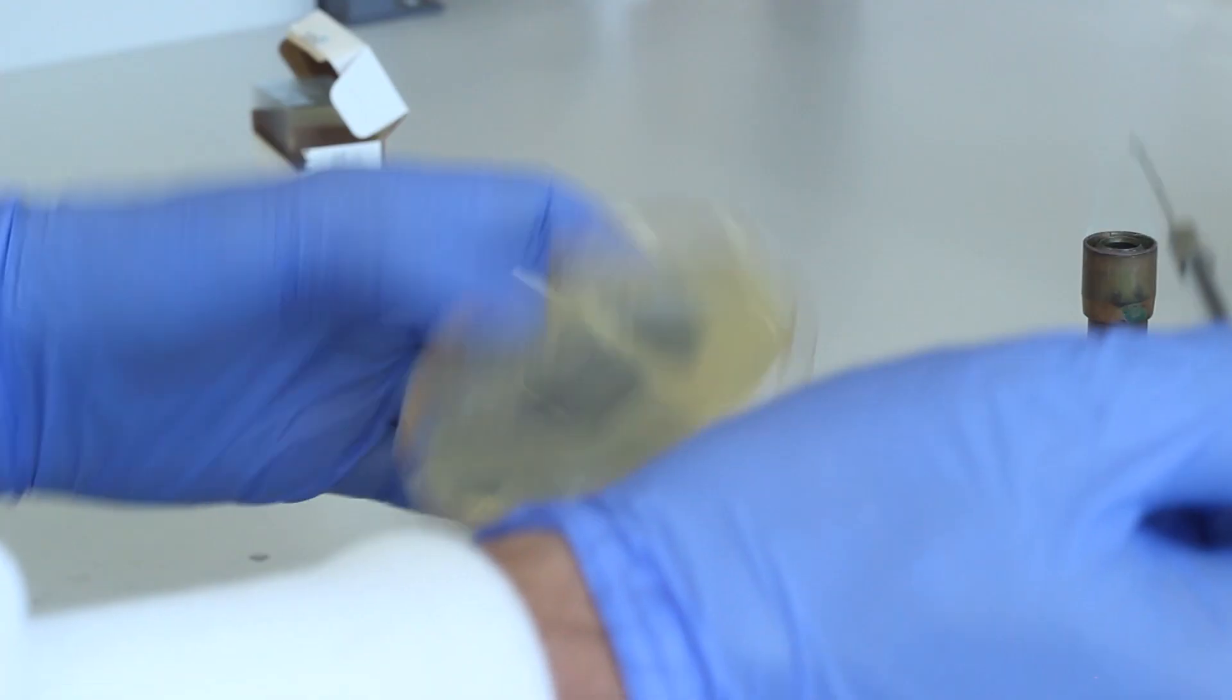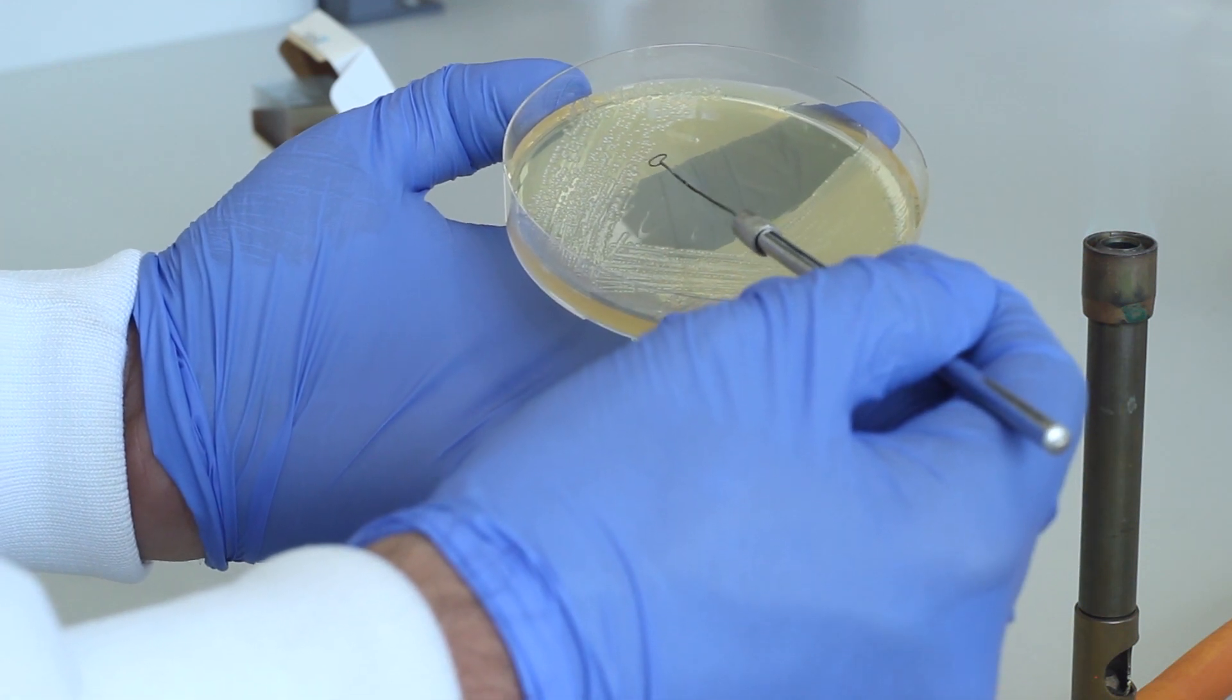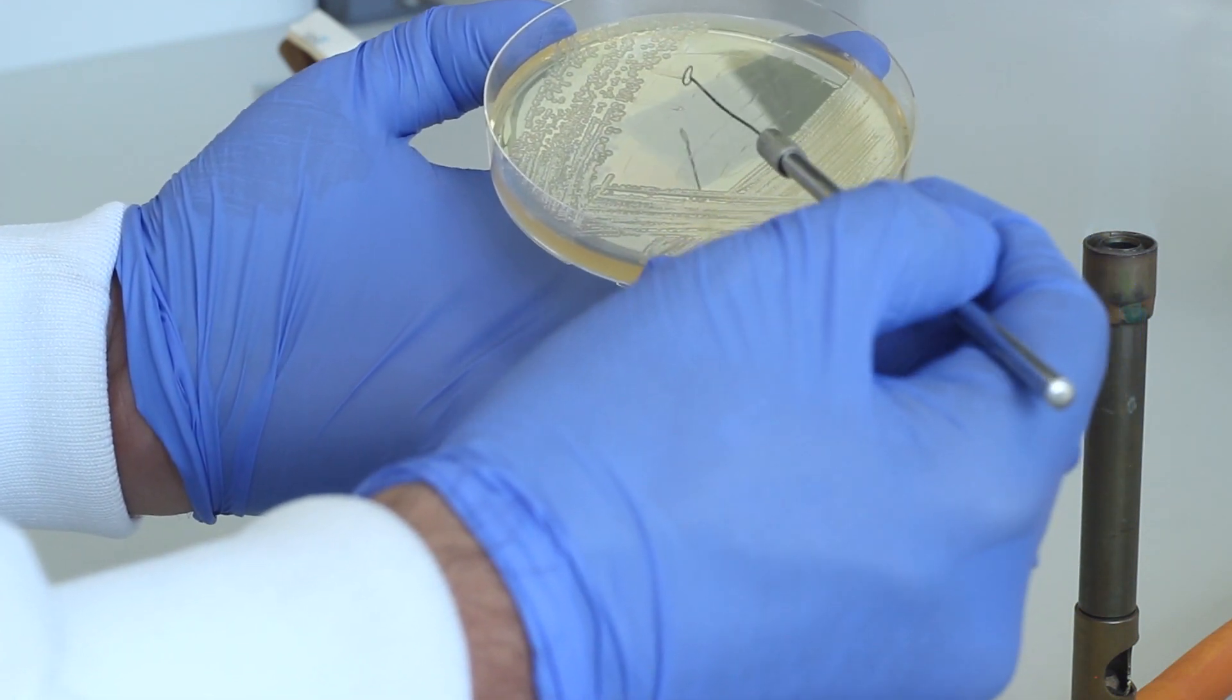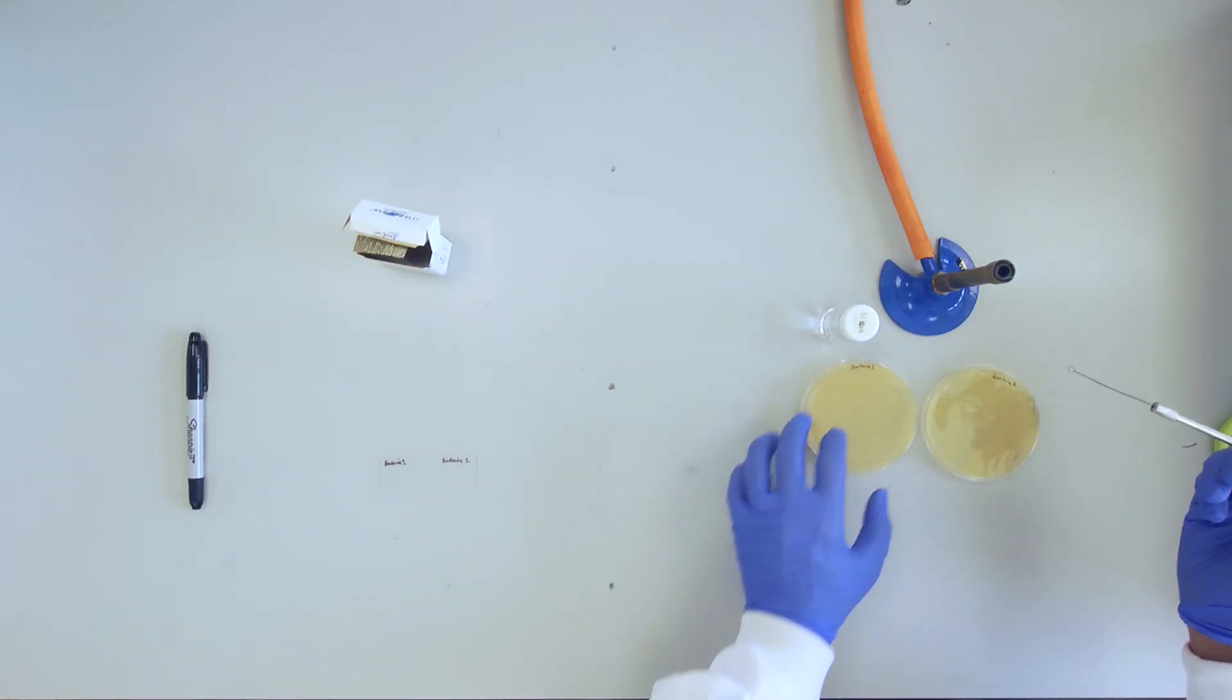Using aseptic technique, take a loopful of the first bacterial colony and emulsify it with the 3% KOH solution on the slide, until well mixed.